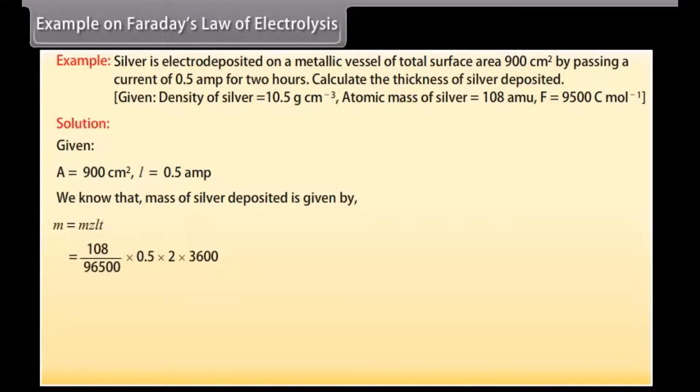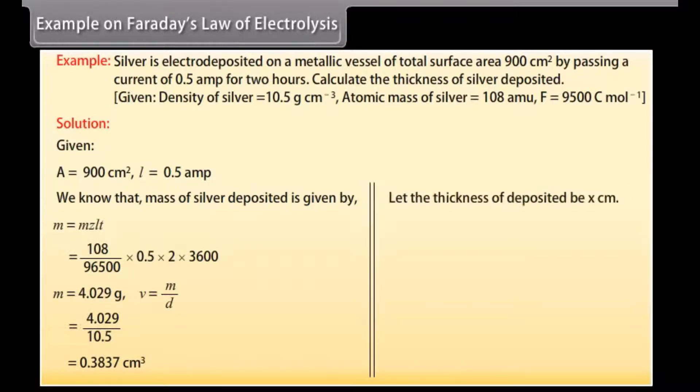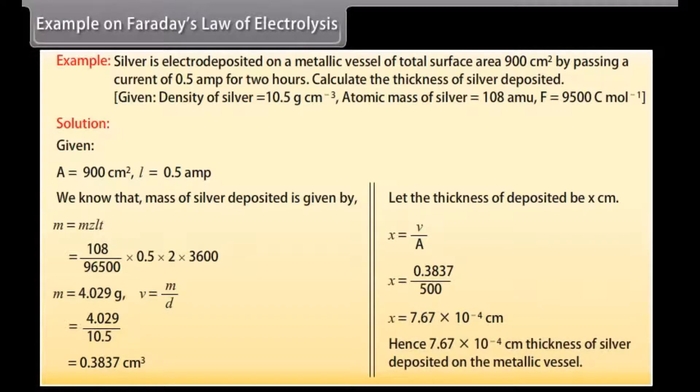We know that mass of silver deposited is given by M is equal to Z I T. By putting the values we get M is equal to 4.029 g. We know that V is equal to M upon D. By putting the values we get V is equal to 0.3837 cm³. Let the thickness of deposited be X cm³. We know that X is equal to V upon A. By putting the values we get X is equal to 7.67 into 10 raised to the power minus 4 cm³. Thickness of silver is deposited on the metallic vessel.